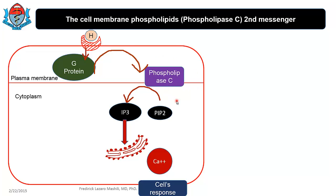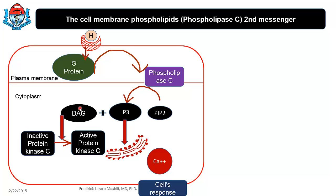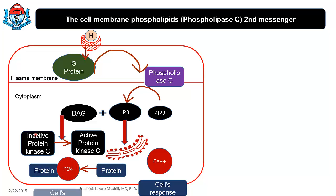When phospholipase C activates the conversion of PIP2 to IP3, it also produces another product associated with IP3 known as diacylglycerol (DAG). DAG will activate kinases — you have inactive kinases being activated. A particular kinase activated here is protein kinase C, or PKC. The kinase is a phosphorylator, and once you have phosphorylation you have a cellular response. This is how you get a response from the cell membrane phospholipid second messenger system.